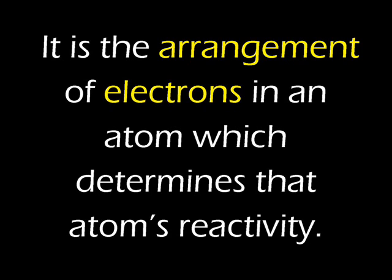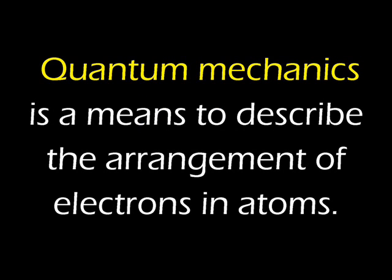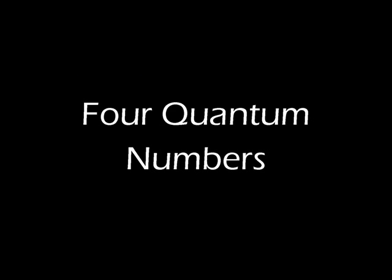There is an area of scientific knowledge used to describe the arrangement of electrons about an atom's nucleus, known as quantum mechanics. Quantum mechanics is just a means for describing where the electrons are — kind of like a code which helps you understand more about the atoms that make up elements. The code of quantum mechanics is based upon four quantum numbers. You might think of these four quantum numbers as being like the letters in our alphabet — a set of symbols which together make up words with meaning. The four quantum numbers, when used together, create a meaningful description of the arrangement of an atom's electrons.